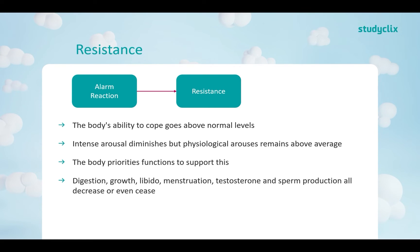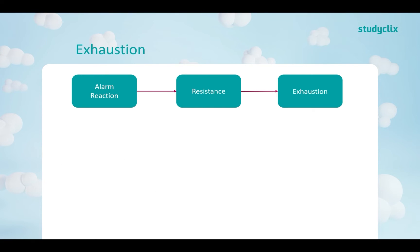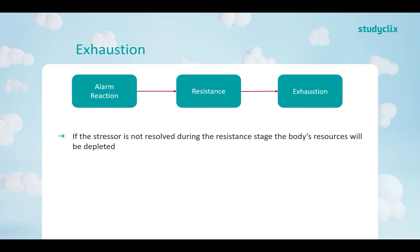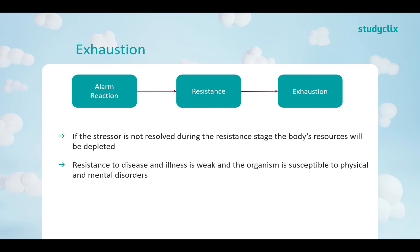Heart rate and blood pressure are higher to cope with this stage. The immune system gets weaker due to the prolonged release of cortisol, which leads us to our final stage: exhaustion. If the stressor is not resolved during the resistance stage, the body's resources will be depleted. Resistance to disease and illness is weak, and the organism is susceptible to physical and mental disorders — largely due to cortisol weakening the immune system. We become vulnerable to the flu, the common cold, and similar illnesses. It can also lead to hypertension, gastrointestinal problems, and heart disease.